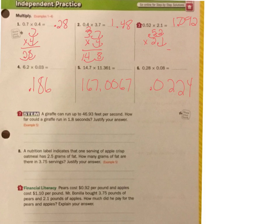Okay, let's go to number 7. A giraffe can run up to 46.93 feet per second. How far could a giraffe run in 1.8 seconds? So what I have to do there is I have to do the 46.93, that's feet per second, times 1.8 seconds. Okay, and this will tell me how many feet they run. 8 times 3 is 24, 8 times 9 is 72, plus 2 more is 74, 8 times 6 is 48, 48 plus 7 is 55, and then 8 times 4 is 32, 32 add 5 is 37.